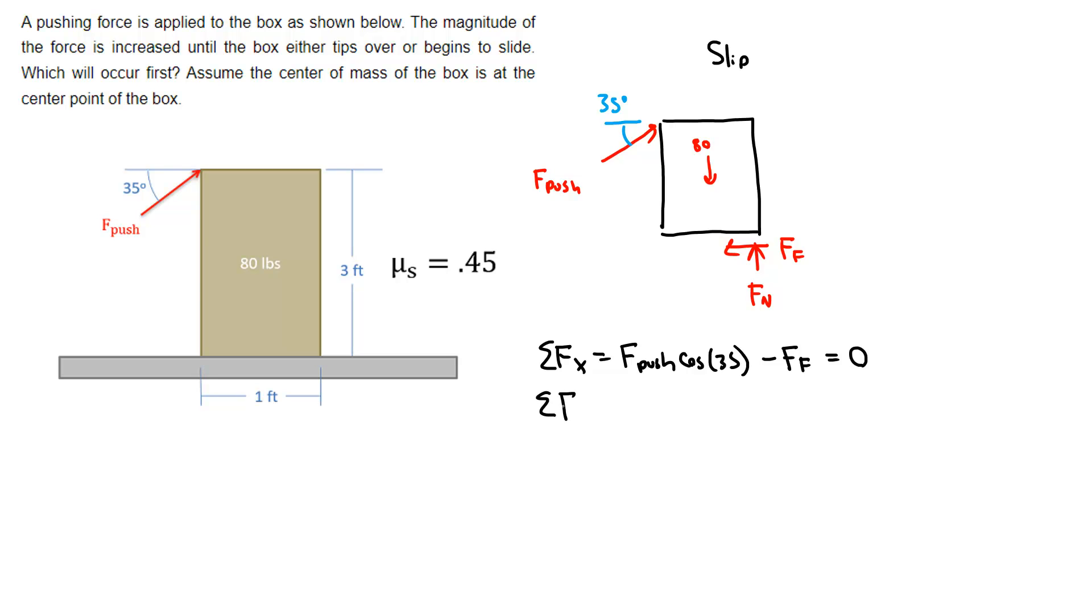And then the last piece of this puzzle is we're assuming slipping, so we're assuming impending motion. So F_f is going to be equal to the coefficient of friction 0.45 times the normal force.